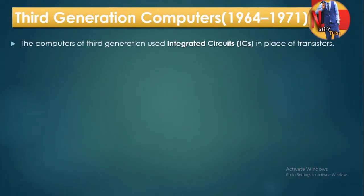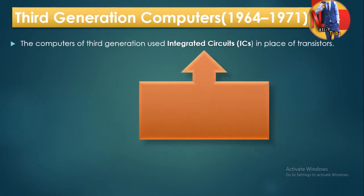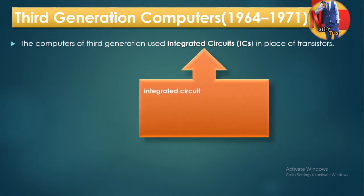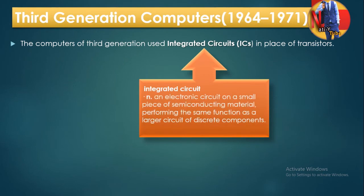The third generation of computers used integrated circuits in place of transistors. An integrated circuit is an electronic circuit on a small piece of semiconducting material.